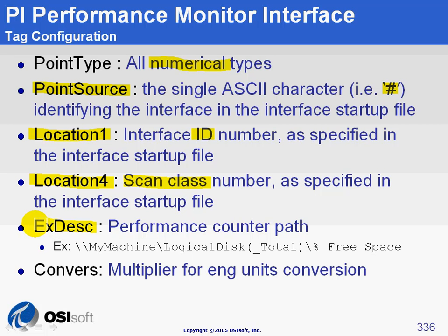The special field here is the extended descriptor, xDesk. This attribute contains the path to the counter. An example of a path could be backslash backslash, the name of the machine, backslash, the performance object, then when applicable an instance in parentheses, then backslash and the name of the counter. In some cases you may use the converse attribute, where you put a number so the value is multiplied by it prior to being archived — for example, to convert bytes into kilobytes or megabytes.